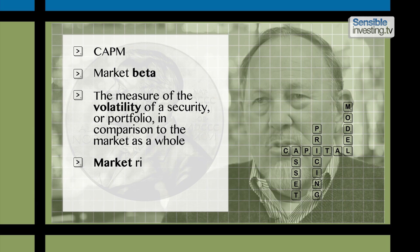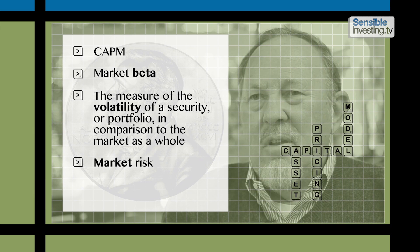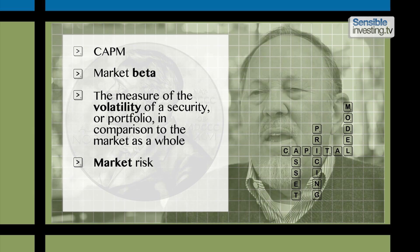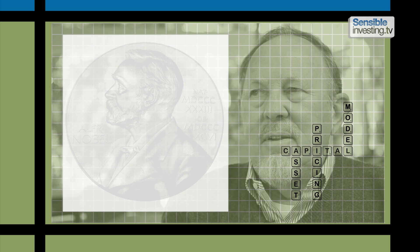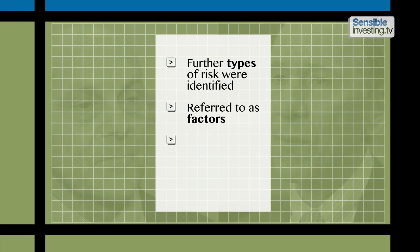Sharpe referred simply to market risk, but in the decades that followed, fellow academics identified specific types of risk or beta, often referred to as factors.